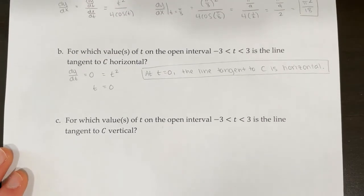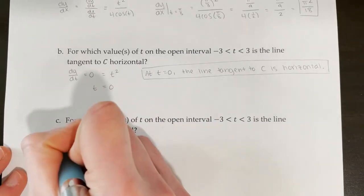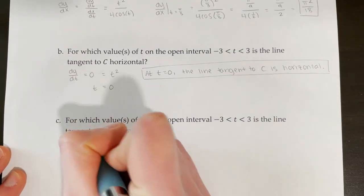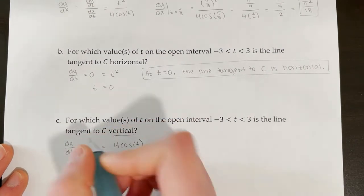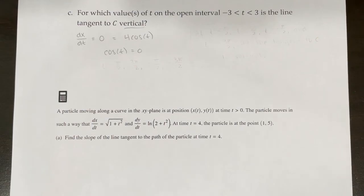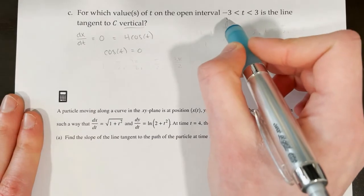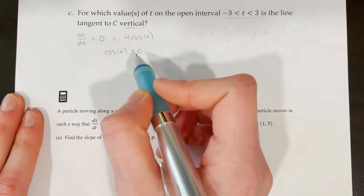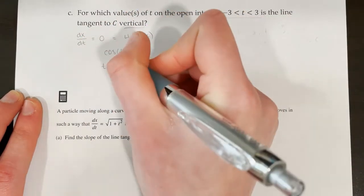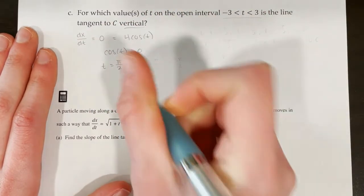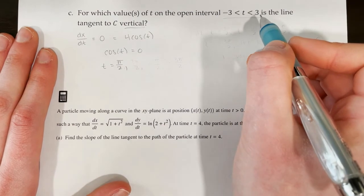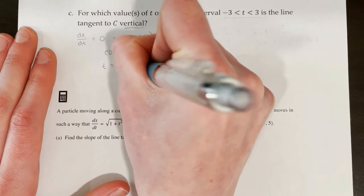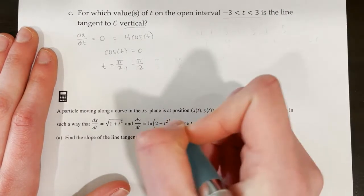Part C: For which values of t on −3 < t < 3 is the line tangent to C vertical? We need dx/dt = 4cos(t) = 0, so cos(t) = 0. Within the interval, cos(t) = 0 at t = π/2 and t = −π/2. The value 3π/2 is outside the interval since π > 3, so the two values are t = π/2 and t = −π/2.